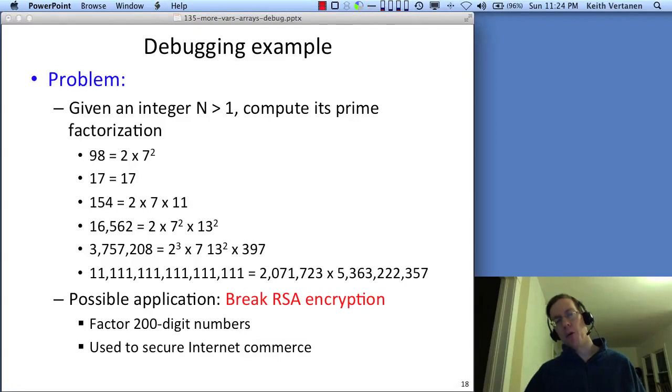So let's debug a program. You may be thinking, well, I'm not going to make any mistakes or how much trouble can I get into? I'm going to show you an example of a very short program that has a lot of mistakes. Here's the problem: you're computing the prime factorization of a big integer. A prime factorization is the list of prime numbers you multiply together to get that number. So, for example, 98 is 2 times 7 times 7. 17, the prime factorization of 17, well, 17 is already a prime number. So its prime factorization is just 17.